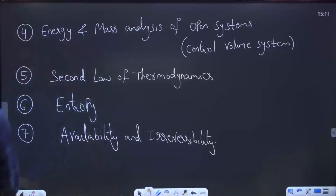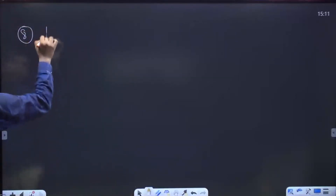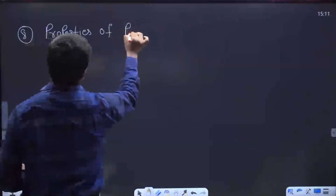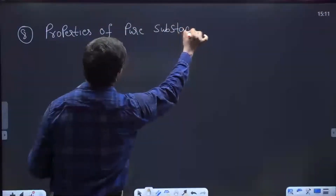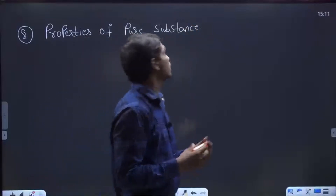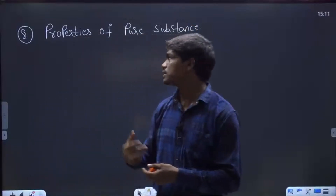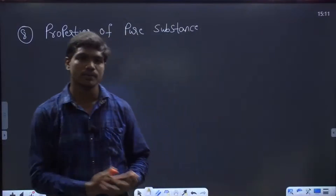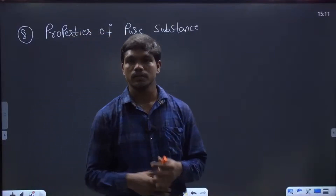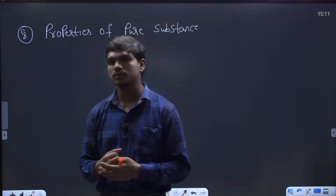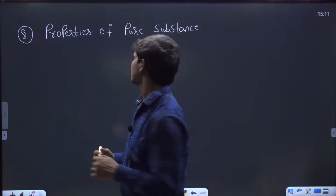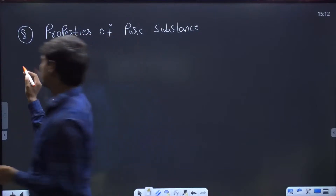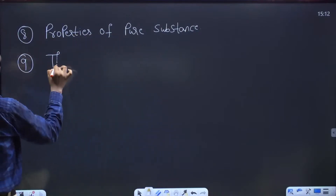After completing availability and irreversibility, we go to one really important chapter: properties of pure substances. We define what a pure substance is and what properties we are interested in finding. We deal with terms like internal energy and enthalpy. For now it's enough to recognize there are certain terms like this in thermodynamics. This is chapter number eight.